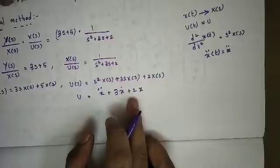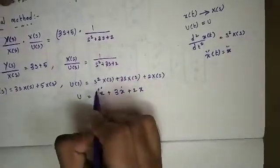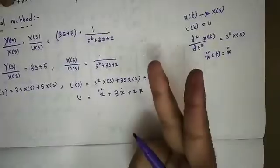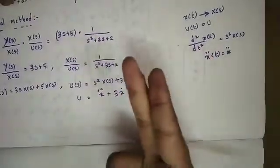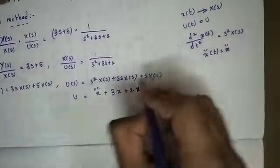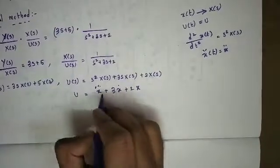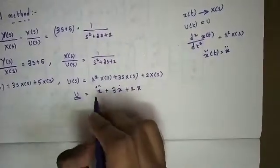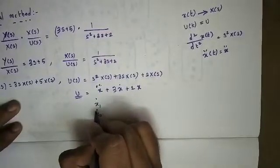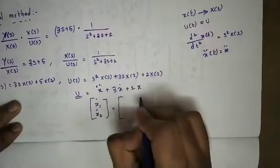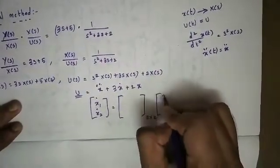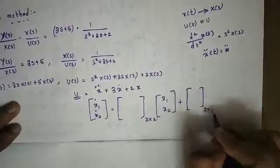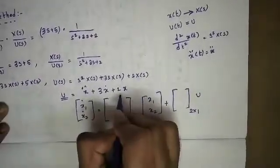Now you can see the differential equation. The order is 2 — second order differential equation. So we define state variables x1 and x2. The differential state variables are x1-dot and x2-dot. In this case we have the input. So x1-dot x2-dot is equal to: A matrix is 2 by 2, multiplied by x1, x2, plus B matrix which is a column matrix of size 2 by 1.